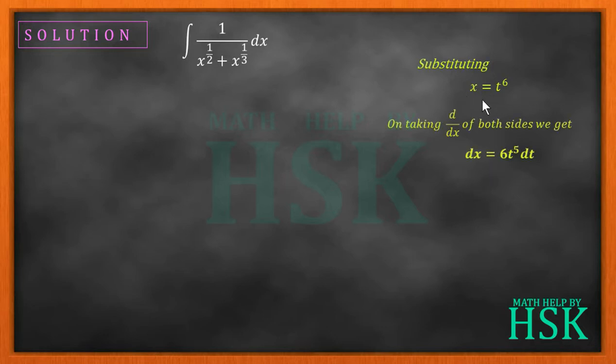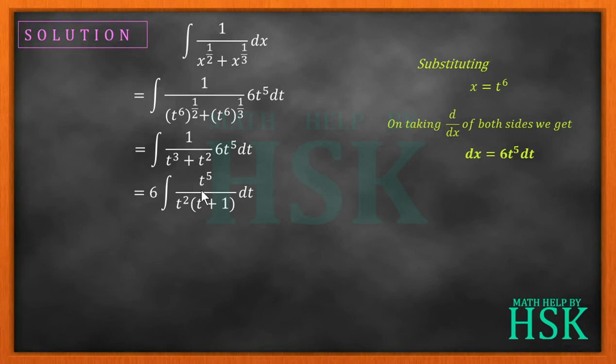I get dx equals 6 times t to the power of 5 dt. Now I've substituted dx as 6t^5 dt and for x I place t^6. These two terms on simplification give me t^3 and t^2. Further, I can write this as 6 outside the integration, t^5 over t^2 times (t + 1).